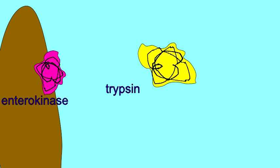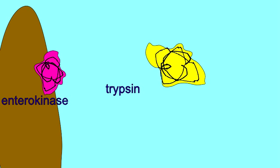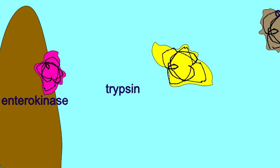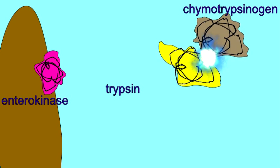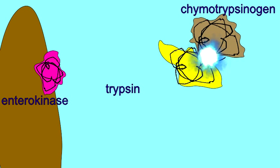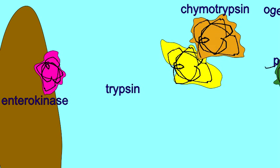Trypsin then cleaves amino acids from the inactive forms of a number of other enzymes. Trypsin converts chymotrypsinogen to the active form of chymotrypsin.